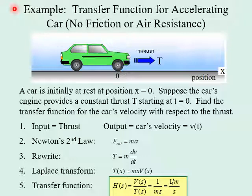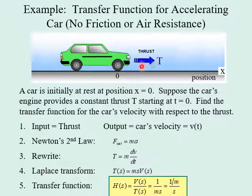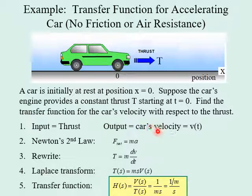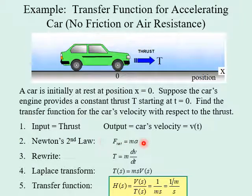Let's start with a simple example — finding the transfer function for an accelerating car with no friction or air resistance. The car is initially at rest at position zero, and the engine provides a constant thrust T starting at T equals zero. We're going to find the transfer function for the car's velocity with respect to the thrust. The input is the thrust of the car's engine — that is the cause — and the output, or effect, is the car's velocity V of T.